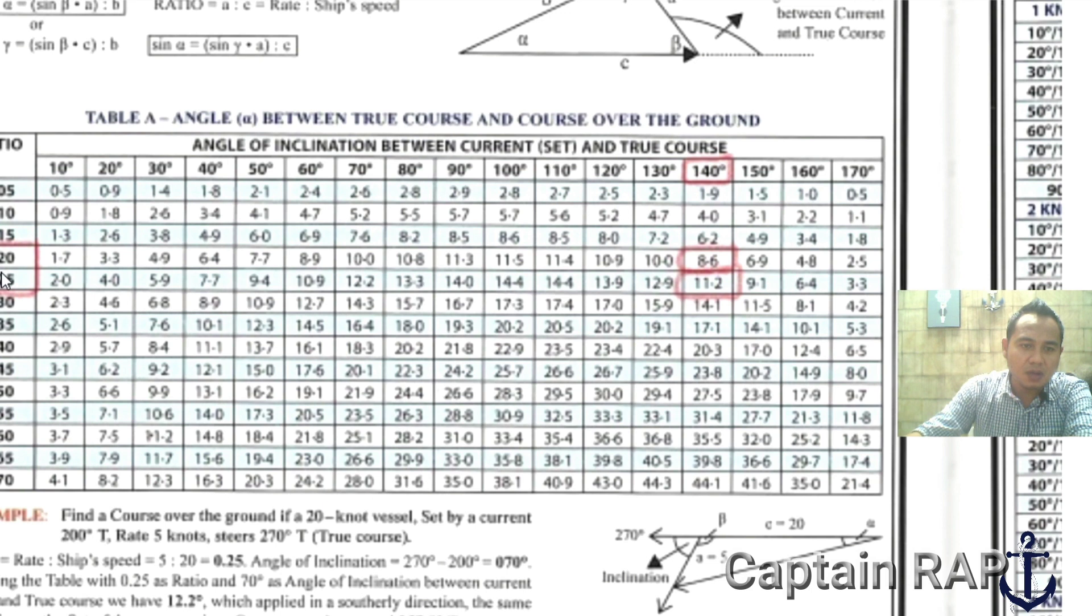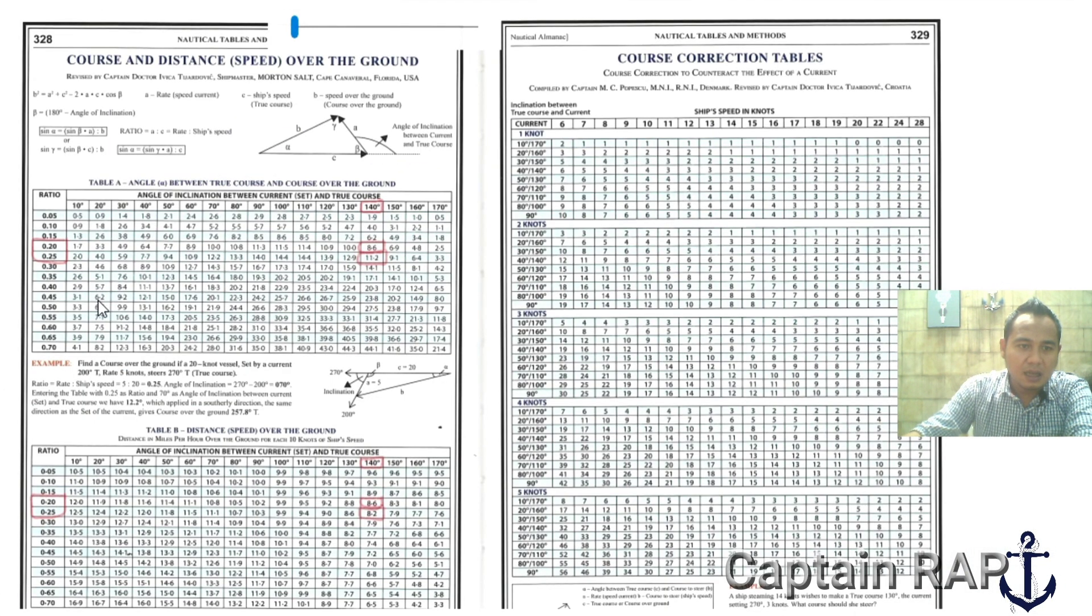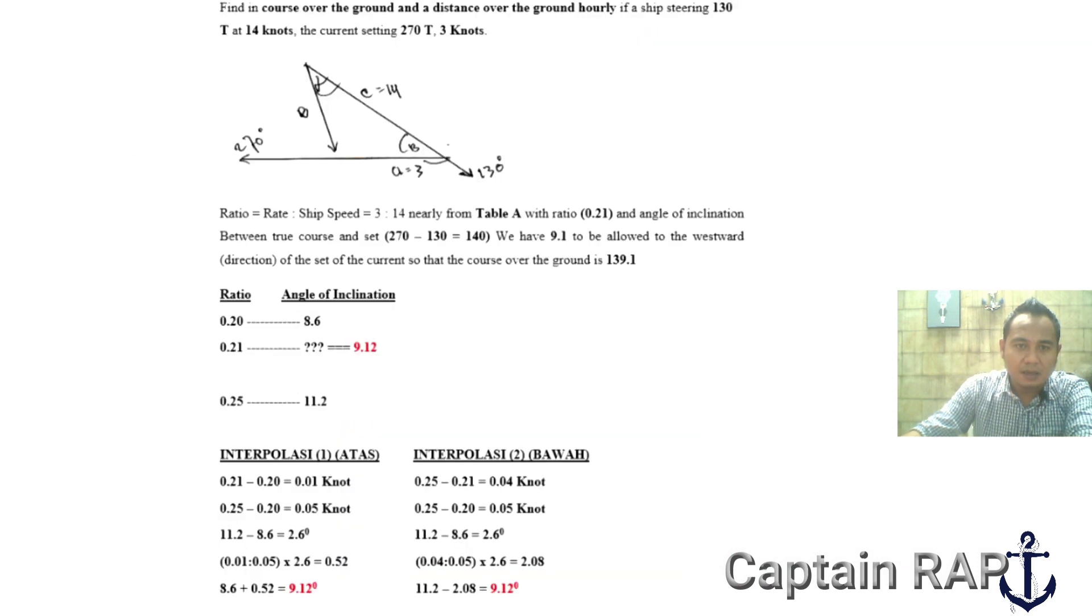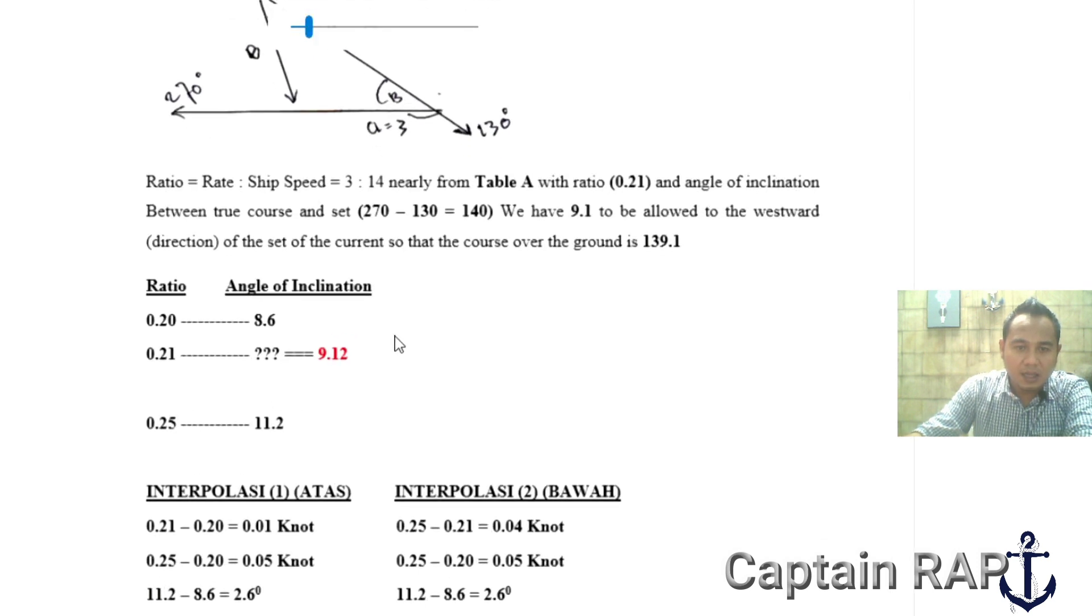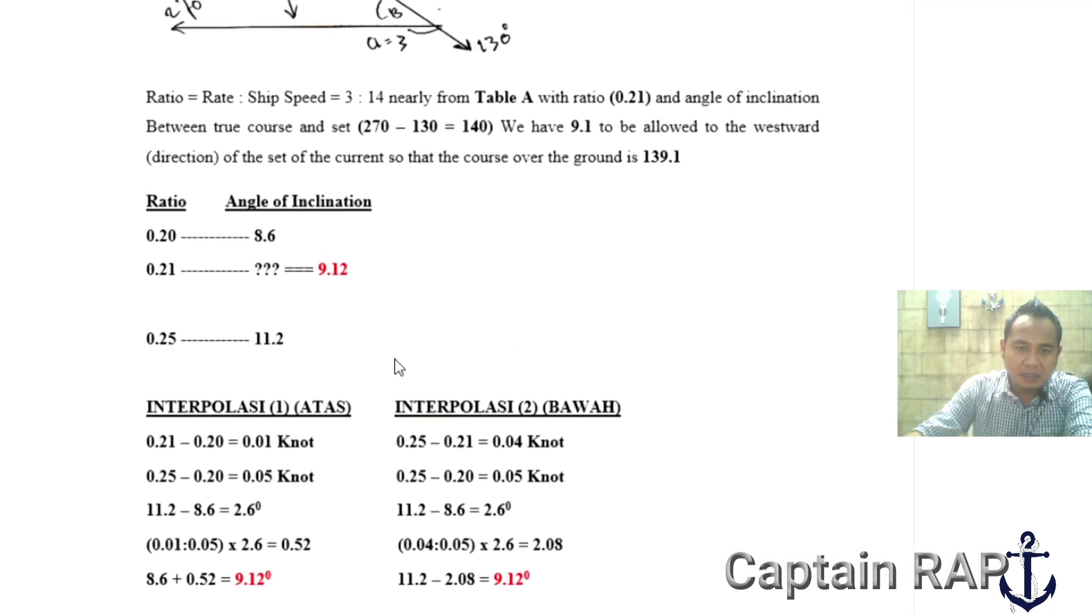Bagaimana cara menemukannya? Untuk menemukannya tentu kita melakukan perhitungan secara interpolasi. Karena 0.21 itu berada di antara 0.20 dengan 0.25, maka walaupun angle of inclination 140, maka dia tetap berada di antara 8.6 dengan 11.2. Bagaimana cara melakukan perhitungan interpolasi? Saya pindahkan yang di tabel tadi: rasio 0.20 angle of inclination-nya 8.6, rasio 0.25 angle of inclination-nya 11.2. Nah 0.21 ini berapa angle of inclination-nya? Karena ini berada di antara, maka ada 2 cara interpolasi yang akan saya bagikan ke teman-teman.